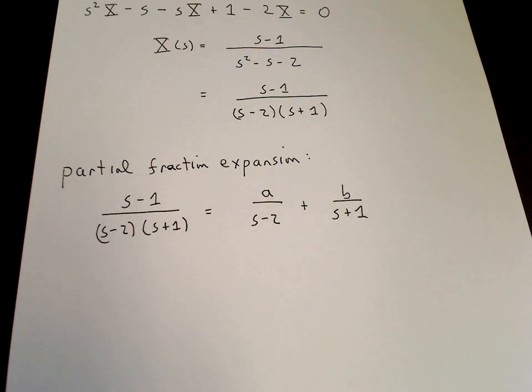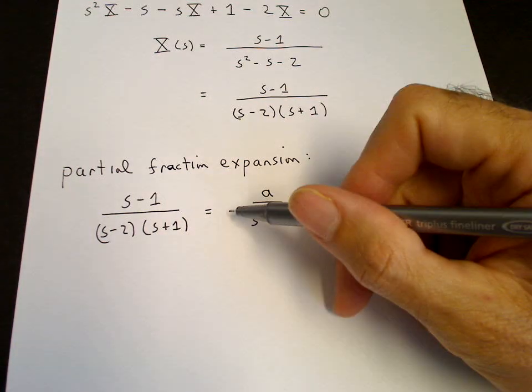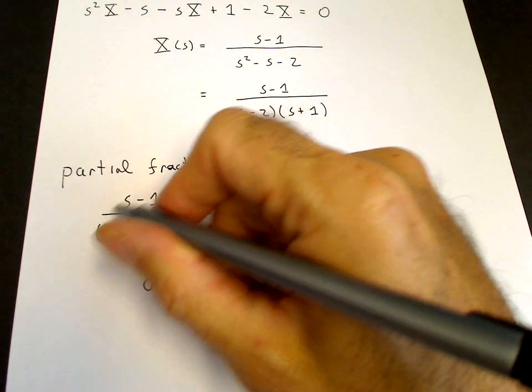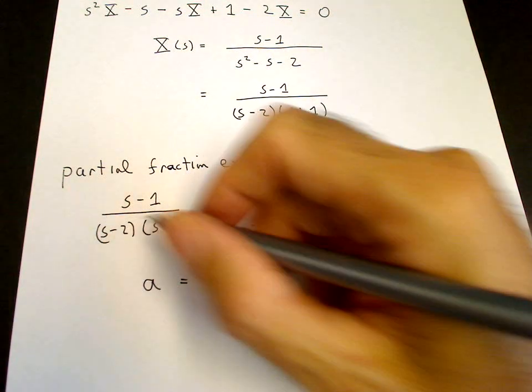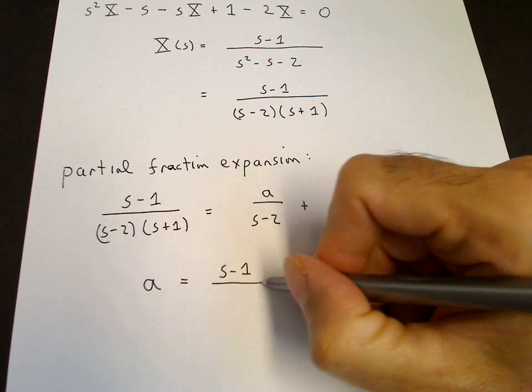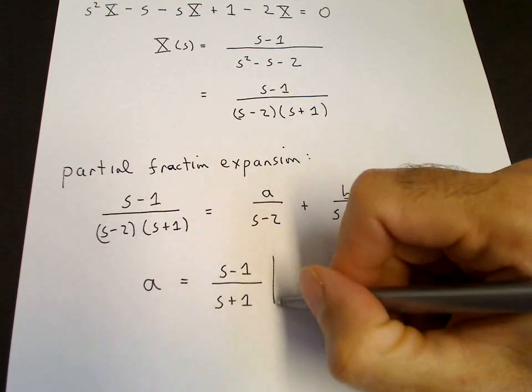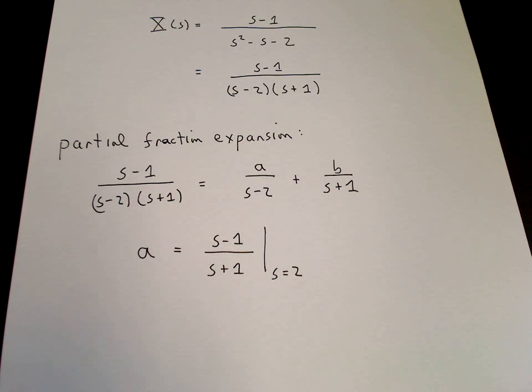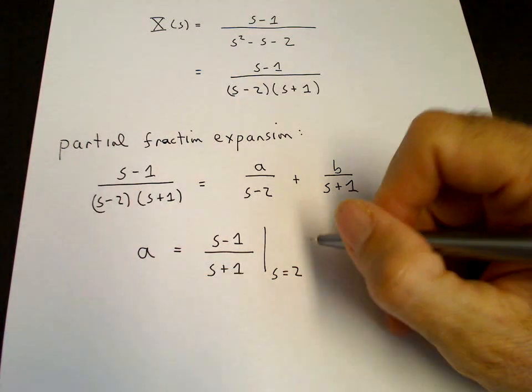A trick we can use is to multiply both sides of this equation by S minus 2 and then set S equal to 2. When we do that, this term will vanish. If we multiply by S minus 2, we get A on the right-hand side. So put that on the left-hand side. Then we multiply this one by S minus 2, so it cancels S minus 2 in the denominator. We get S minus 1 over S plus 1. And we've set S equal to 2 in order to force the B term to vanish. So that's a trick that we can use to isolate A. And when we do that, we get one-third.